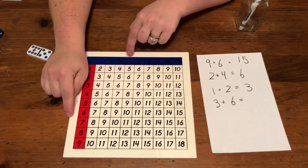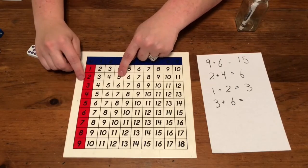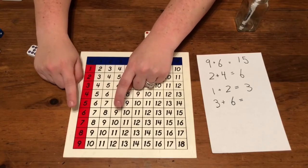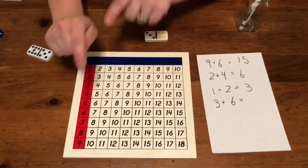Let's double check it. Three plus one, plus two, plus three, plus four, plus five, plus six. Three plus six equals nine.